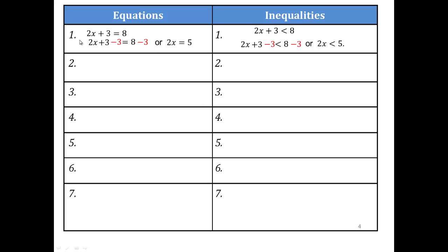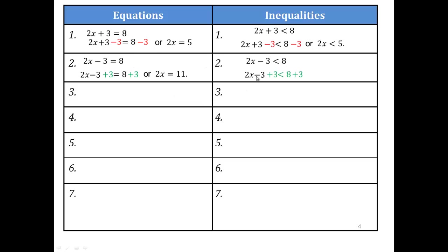Let's do the same with inequalities. We're allowed to subtract 3 from both sides, preserving the inequality, getting 2x less than 5. We are transforming equations and inequalities into equivalent simpler ones so that we can solve them. If instead it's minus 3, to undo minus 3 we add 3 on both sides, giving 2x equals 11. It doesn't matter what the left-hand or right-hand side looks like — as long as you add or subtract the same number on both sides, the equality or inequality is preserved.